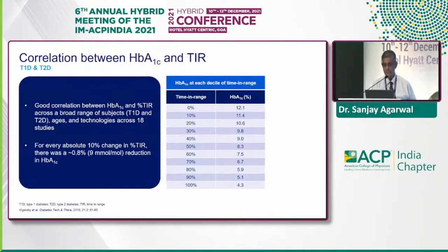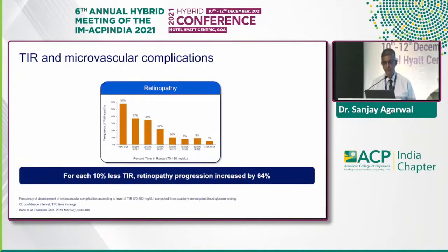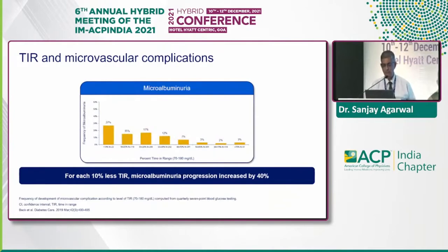There is a correlation between A1C and percentage of Time in Range — looking at the table, 10%, 20%, 30% TIR equates to corresponding A1C values, similar to how estimated average glucose relates to HbA1c. Importantly, for every absolute 10% change in Time in Range there is approximately a 0.8% reduction in A1C values. You can also see the correlation between TIR and microvascular complications: for every 10% less time in range, retinopathy progression increased by 64%, and progression to microalbuminuria increased by 40%.